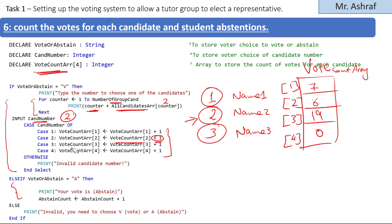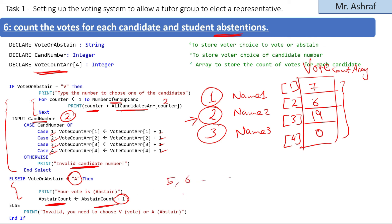We must validate the input — if it is one, two, three, or four, perform the corresponding action; otherwise show an error message for an invalid candidate number. If 'vote_or_abstain' equals 'a', we increment the 'abstain_count' variable by one. At the end we count the total abstentions, which might be five, six, seven, eight, or whatever the number is. If anything else is entered, we show an error message to validate that as well.